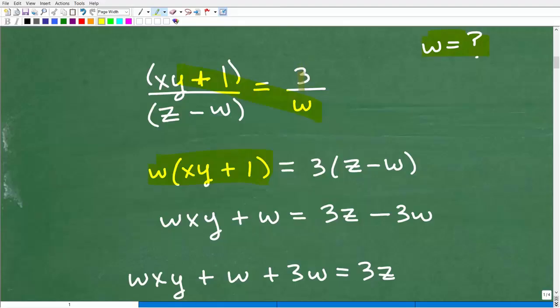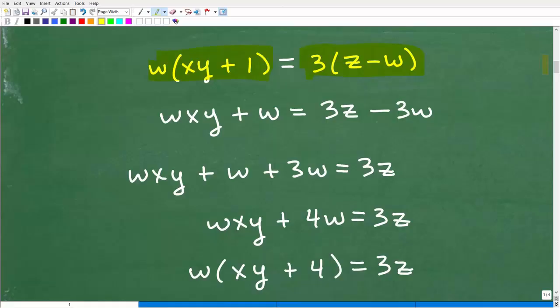So put those grouping symbols in. So we're going to go this way and then we're going to take this 3 and multiply it by z minus w. So we've got 3 times z minus w and there we go. So this is the way we're going to start off the problem.